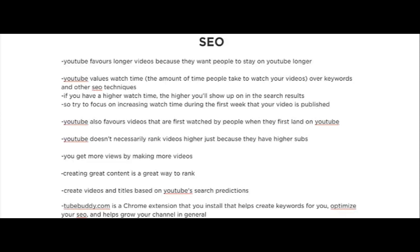You'll get more views simply by making more videos, and the greater the content the better, because with great content comes more watch time, more likes, and all the things that will be seen as favorable by YouTube's algorithm. Make sure to use the keywords in YouTube's search predictions when you're creating your titles, or even when you're thinking of what video to make.